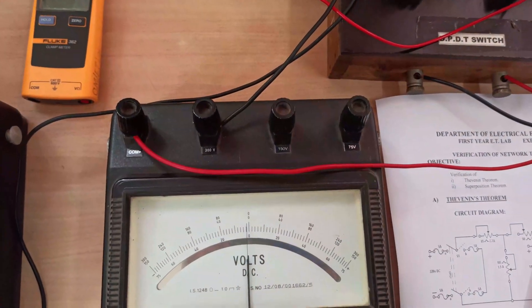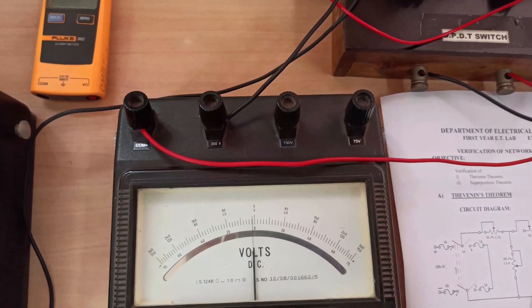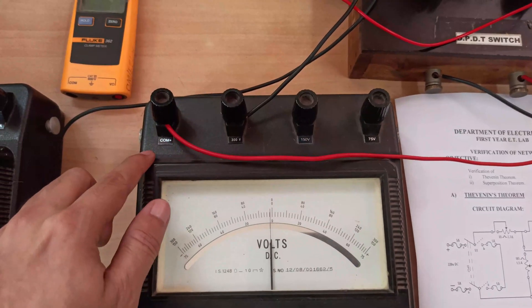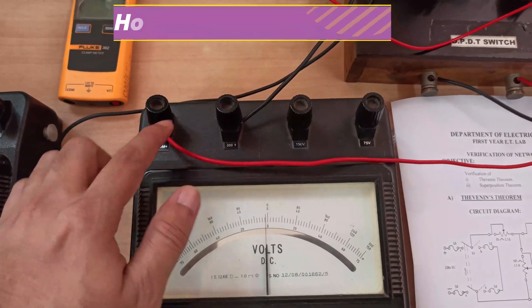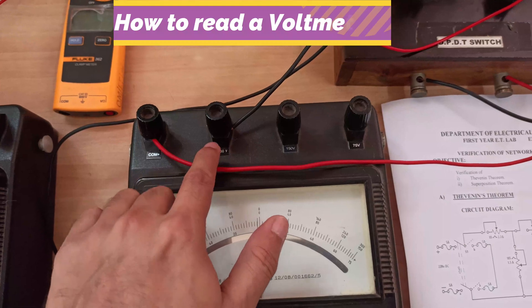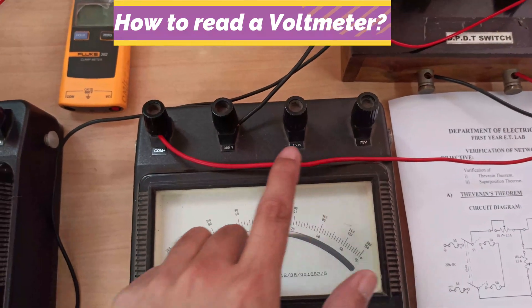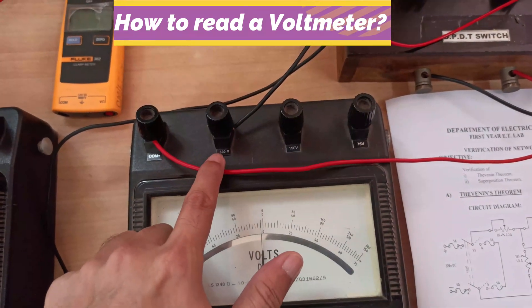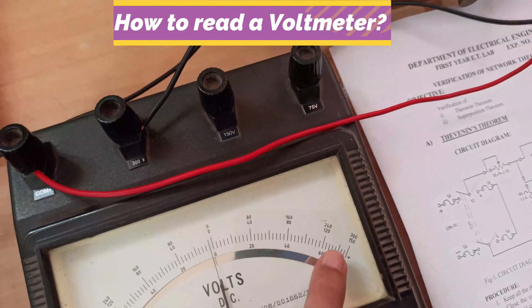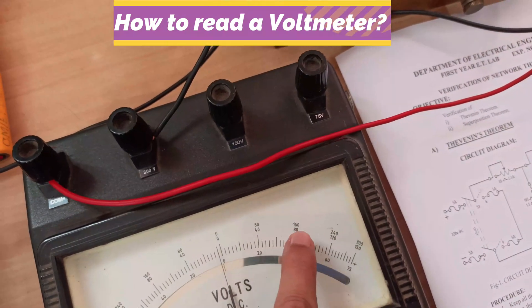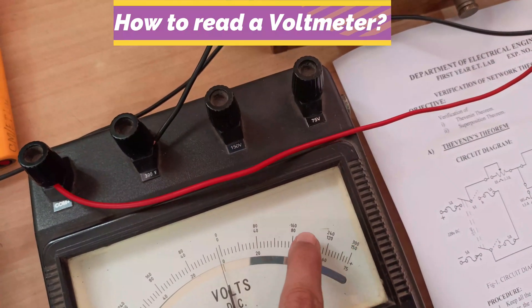In the voltmeter you have three different ranges. You will be connecting one wire to this common terminal and the other wire to any of these three ranges. If you connect it at the 300 voltage range, you should be looking at the display at the top readings, that is the 300 voltage scale.